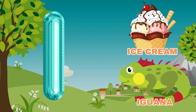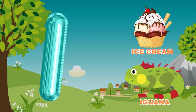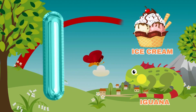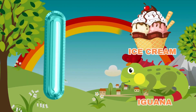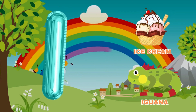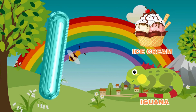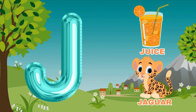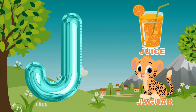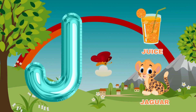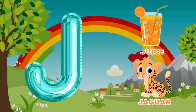I, I for ice cream, I for iguana. J, J for juice, J for jaguar.